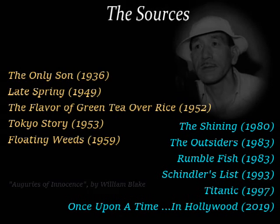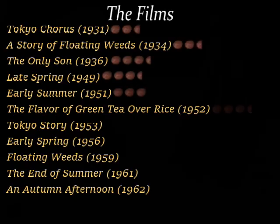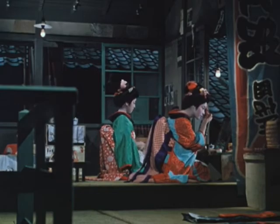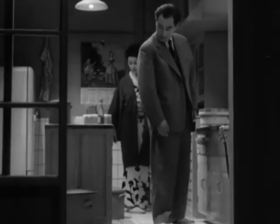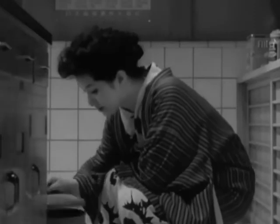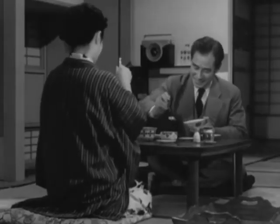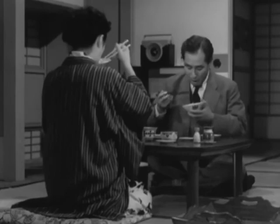I hope you enjoyed that video. Ozu was exactly the shot in the arm I needed this month. There's so much more I wanted to talk about that I couldn't fit into one video — Floating Weeds, the climax of The Flavor of Green Tea Over Rice. Do you have a favorite Yasujiro Ozu movie, or what director completely upended your concept of how filmmaking is done? Let me know in the comment section. I'll be back before the end of the year with more ruminations on cinema.